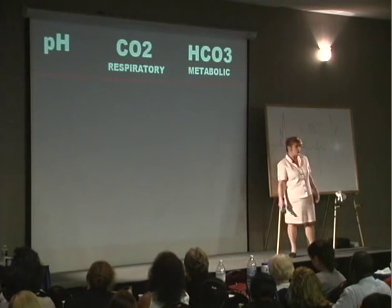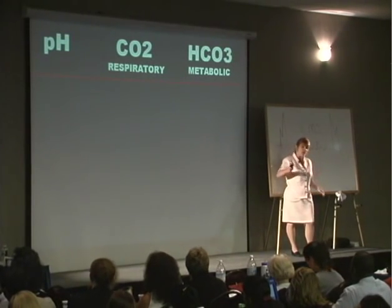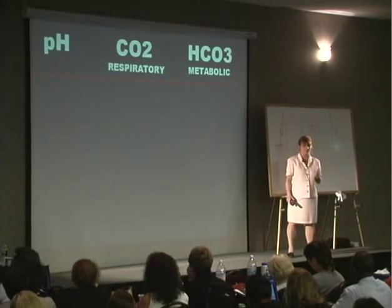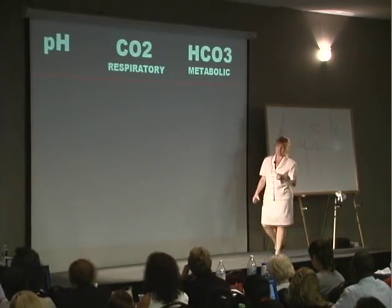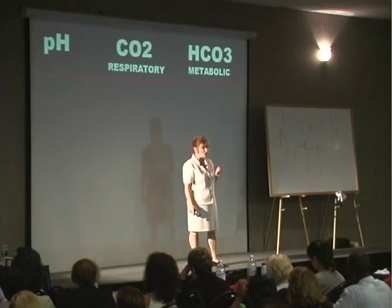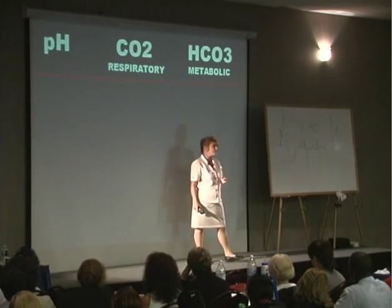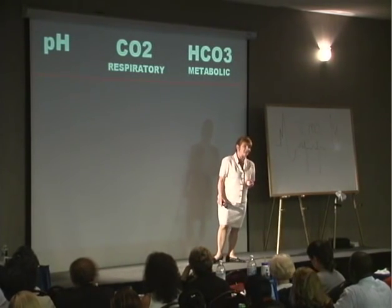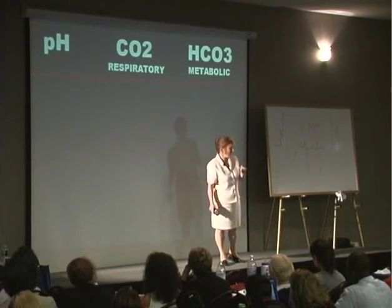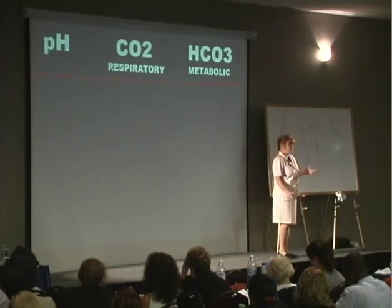Here's how you interpret ABGs. You drop dead and come back to life, and you find yourself living in the land of ABG. As you walk around the land of ABG, everyone's got a first name, a middle name, and a last name. The only choice you have for first name is uncompensated or compensated. Middle name: only respiratory or metabolic. And last name — total horror — only a choice of two: either acidosis or alkalosis.